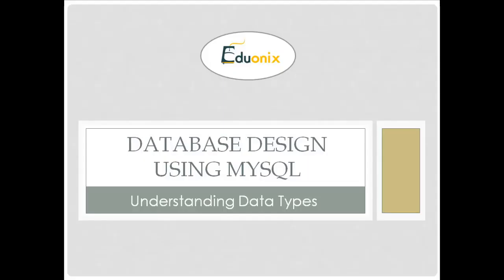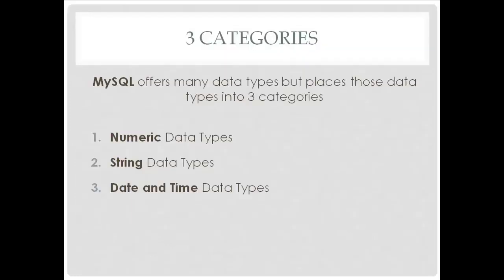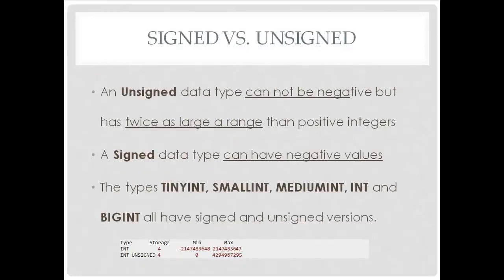In this section I want to talk about data types. Every single piece of data that you put into a database, into a table, has to be assigned a data type. There are a bunch of data types, but there are three main categories: numeric data types — obviously numbers, integers, floating points — strings, which is basically text, and date and time data types.